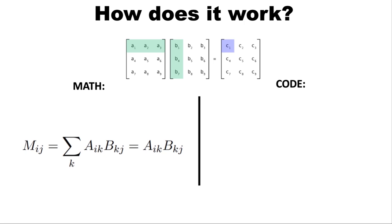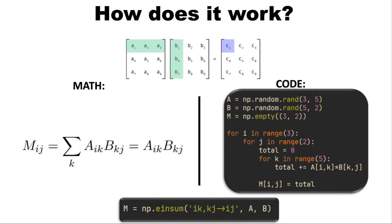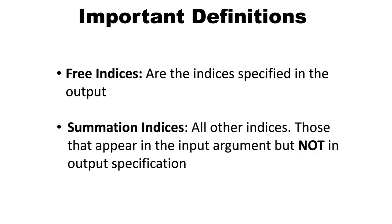We can write this without the sigma because we implicitly know that those dimensions are going to be multiplied and summed over. Comparing this to matrix multiplication using nested loops: we have two outer loops I and J, and then an inner loop summing over the element-wise multiplications of A and B. Using einsum, we can do matrix multiplication with the following call, where IK specifies the dimensions of the first input A and KJ specifies the dimensions of the second input B. Then we do arrow and then IJ specifying the dimensions of the output M. K is repeated over the input, meaning this dimension will be multiplied. Two important definitions: free indices are the indices specified in the output, and summation indices are all the others — those indices that appear in the input but not in the output.